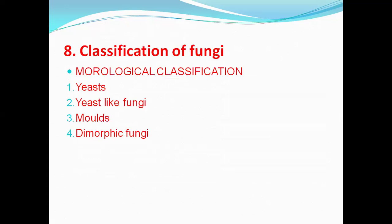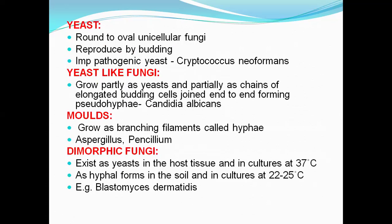Next question: classification of fungi — morphological classification. Based upon morphology, fungi are mainly classified into 4 types: yeast, yeast-like fungi, molds, and dimorphic fungi. Yeast is round to oval, unicellular fungi reproduced by budding, forming thick creamy colonies on culture media. Example: Cryptococcus neoformans. Yeast-like fungi grow partly as yeast and partly as elongated chains of budding cells joined end-to-end, forming pseudo-hyphae. Example: Candida albicans.